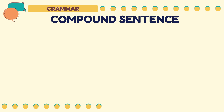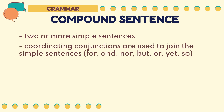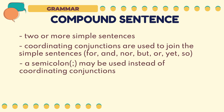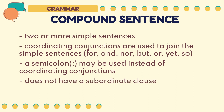Let's now discuss compound sentences. Compound sentences have two or more simple sentences. They make use of coordinating conjunctions to join the simple sentences. Coordinating conjunctions are the FANBOYS: for, and, nor, but, or, yet, and so. Sometimes, instead of using a coordinating conjunction, a semicolon is used. Lastly, since it is joining two or more simple sentences, a compound sentence does not have a subordinate clause.